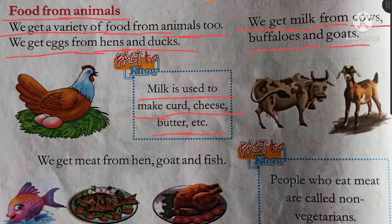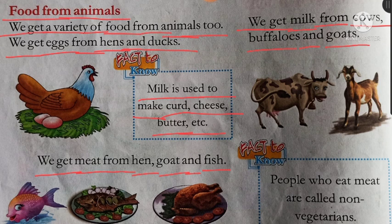We get meat from hen, goat and fish. Meat — maas, hen — murgi, goat — bakri, fish — machli. Hum meat hen, goat aur fish se prapt karte hain.